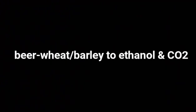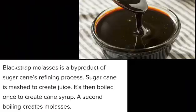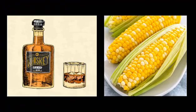The nature of the beverage depends on the material fermented and the strains of yeast used in fermentation. For example, beer is made by yeast fermentation of grains to ethanol and carbon dioxide. Rum is a product of blackstrap molasses fermentation. And whiskey is the product of corn and rye fermentation.